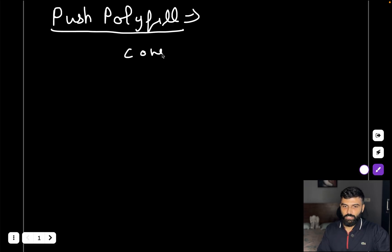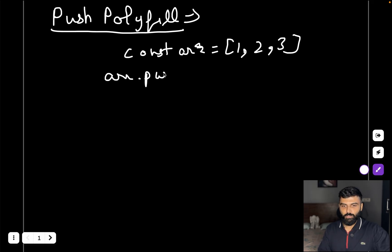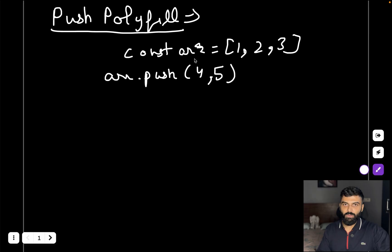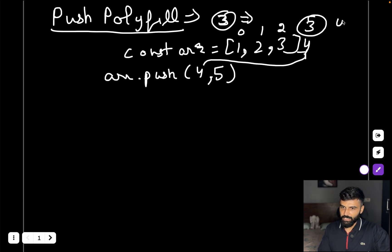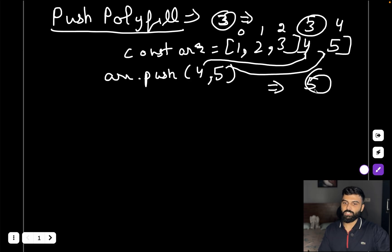Let's understand how the push method works internally. For an array with values one, two, three, you can directly use the push method and pass multiple comma-separated values. It checks the length property — which is three — and from that length index it starts adding elements. It adds four, increases the length, adds five, and returns the updated length, which in this case is five.